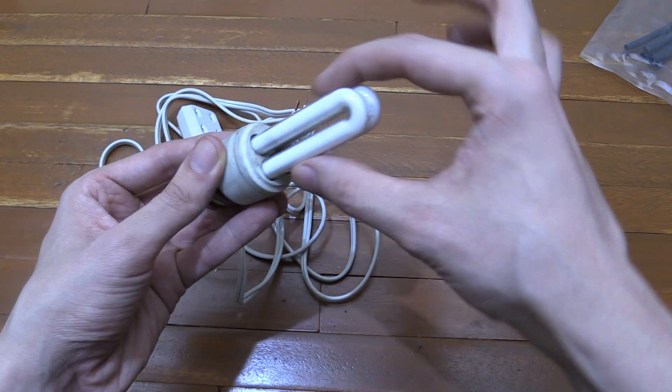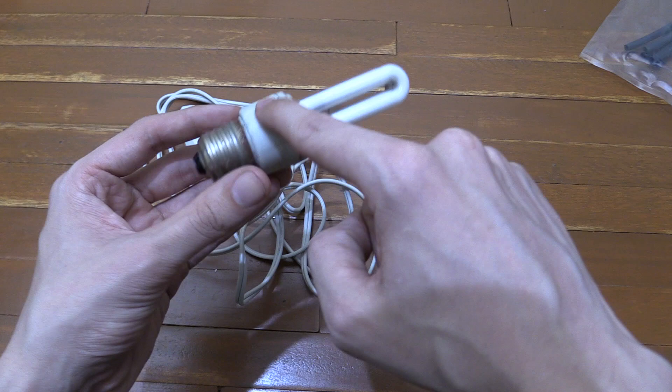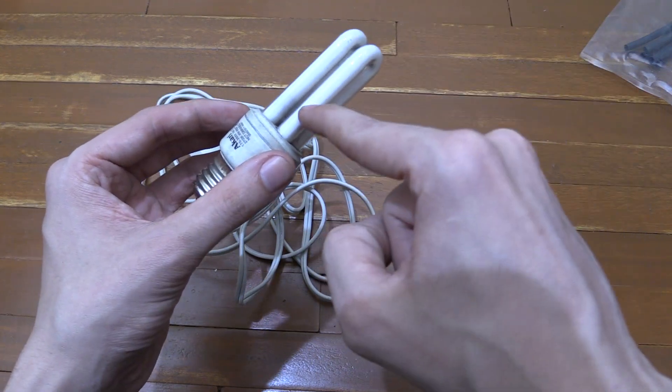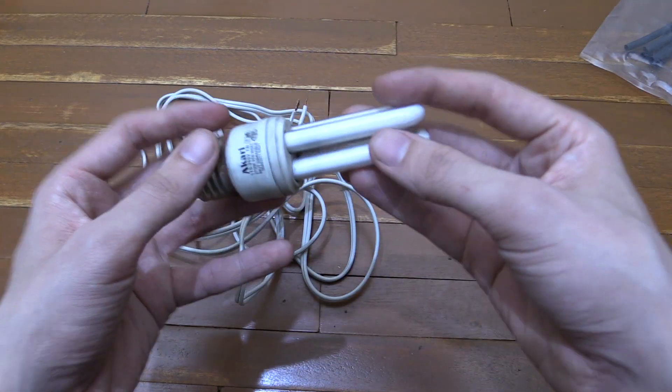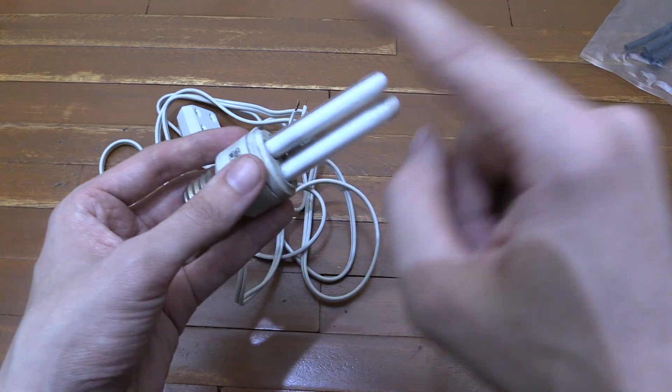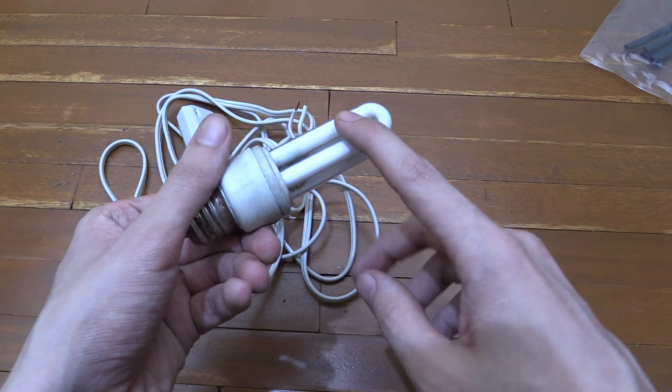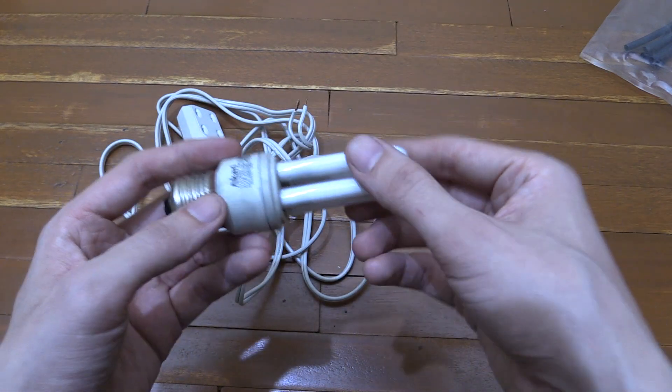Now what we need to try and do is separate the bulb part from the electronics part. Now a word of warning here if you break this glass the gas is going to escape and it's potentially toxic. So try not to break the glass and if you do you're going to have to leave the room immediately and try and air it out.